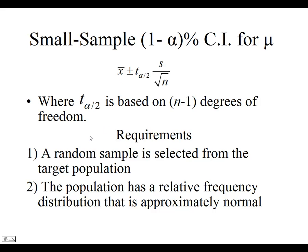Our requirements, we need a random sample from the target population. That's going to be the case for any sort of confidence interval or test that we do. And for this one specifically, we have to make sure that we are pulling data from a data set that's at least approximately normal.